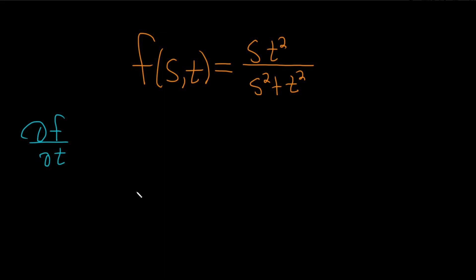In this problem, we have a function of two variables, and we're asked to find the partial derivative of the function with respect to t.